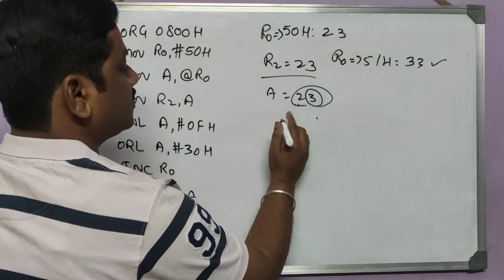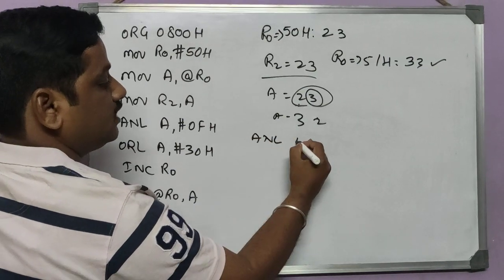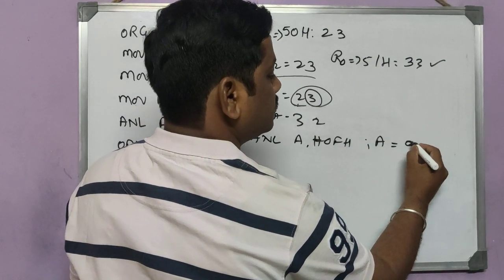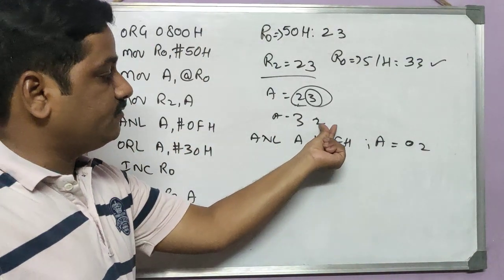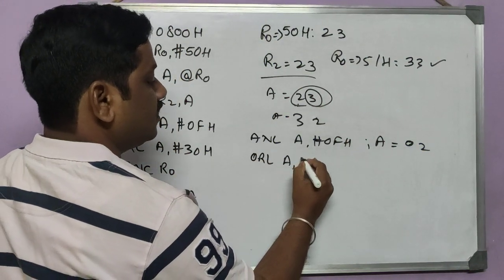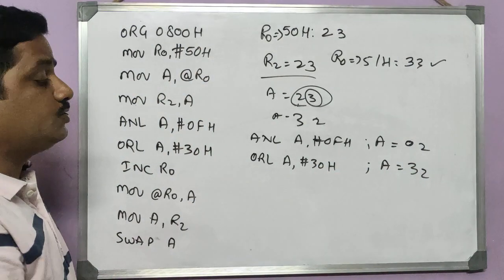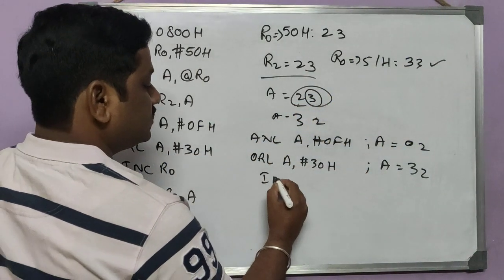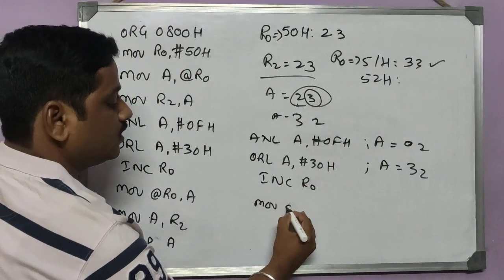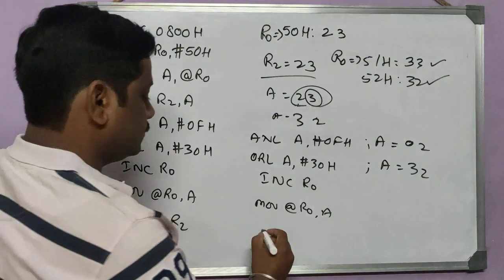After the swap, the accumulator holds 32H. I then mask the lower nibble again with ANL A, #0FH, which gives 02H in the accumulator. Next, I apply ORL A, #30H, resulting in 32H — that is the ASCII code for the BCD digit 2. I increment R0 again so it points to 52H, then store the result with MOV @R0, A. Location 52H now holds 32H.